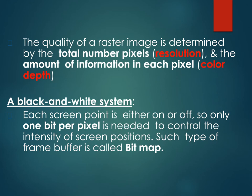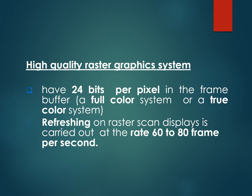The quality of a raster image is determined by the total number of pixels and the amount of information stored in each pixel. In a black-and-white system, each screen point is either on or off, so only one bit per pixel is needed to control intensity; this type of frame buffer is called a bitmap. High-quality raster graphics systems use 24 bits per pixel in the frame buffer, which is known as a full-color or true-color system.